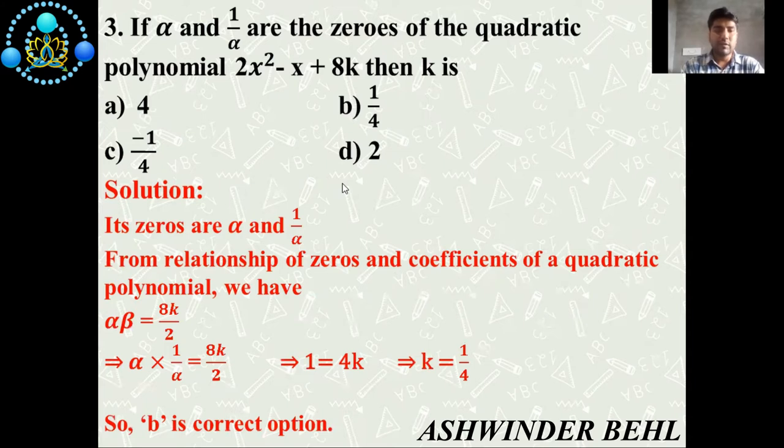So now we will discuss the solution. Its zeros are α and 1/α. From relationship of zeros and coefficients of a quadratic polynomial, we have α × β = 8k/2. According to our question, α × 1/α = 8k/2. Alpha cancels, so what we get here, 1 = 4k, and value of k is 1/4. So b is correct option.